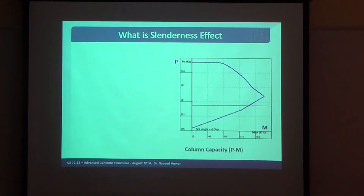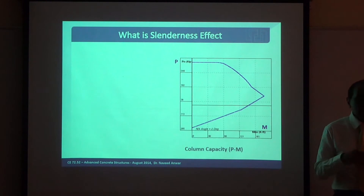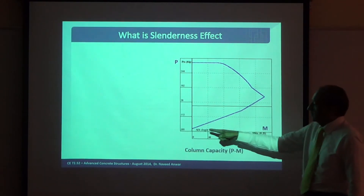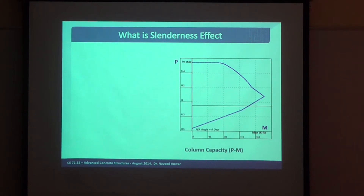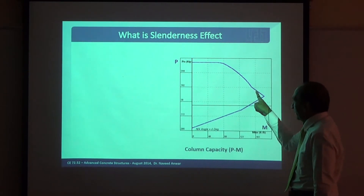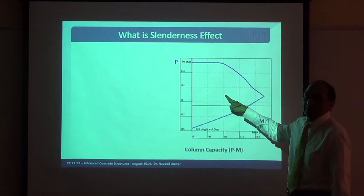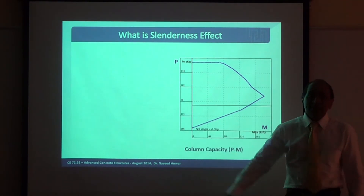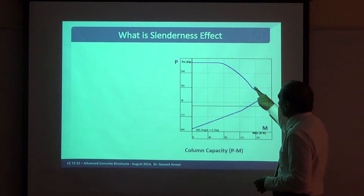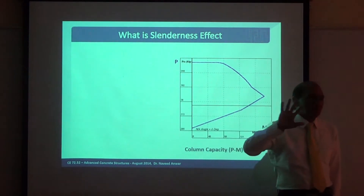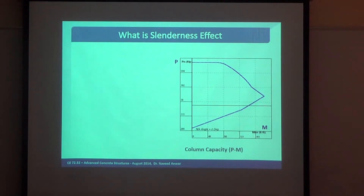Please watch this carefully — if you understand this slide, half the problem will be solved. This is the capacity interaction curve, which is a failure criterion. If the combination of P and M is inside, it is considered safe; outside is unsafe — this is a line dividing safe and unsafe based on 0.003 concrete strain or similar failure criteria. This is for a short column at the cross-section level.